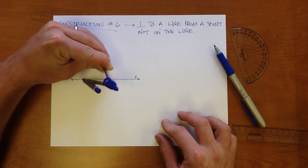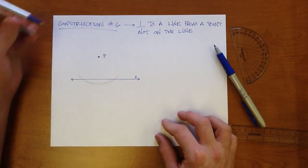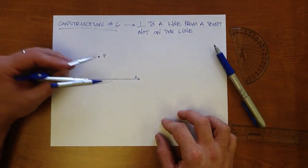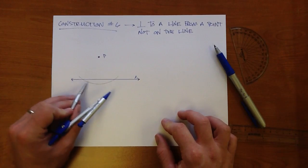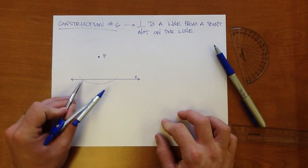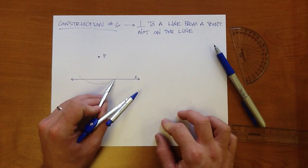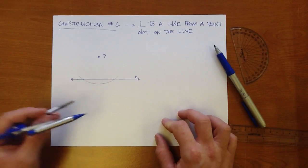It's kind of hard for me to hold my hand so you can see the whole thing. But you had your point, or your center of your compass, on point P, and you struck an arc that intersected line L at two different points. You have an intersection here, and you have an intersection right about here.